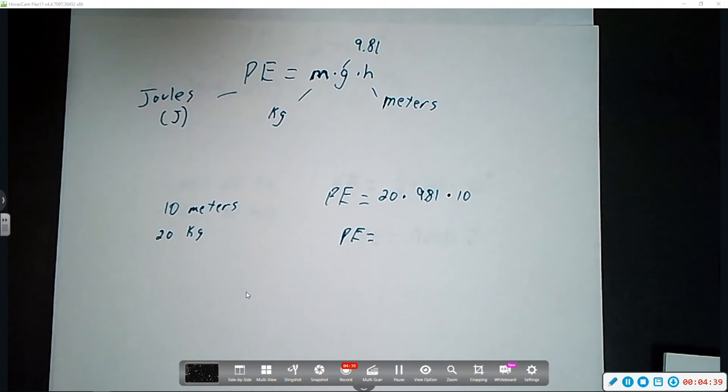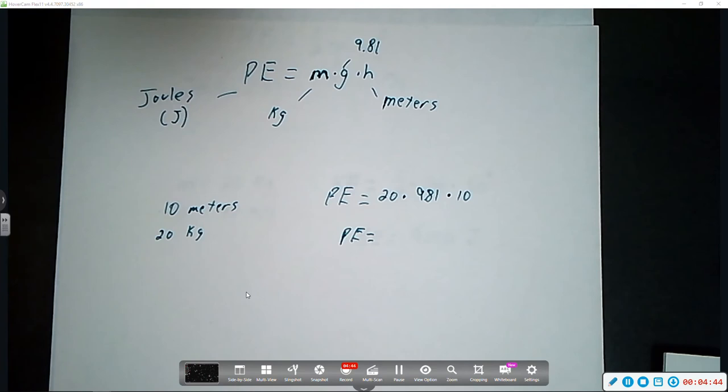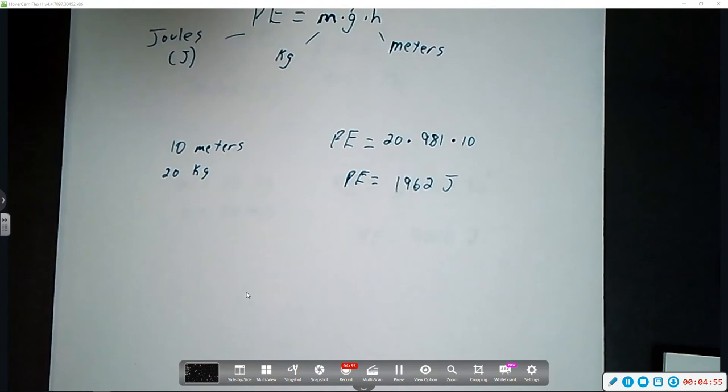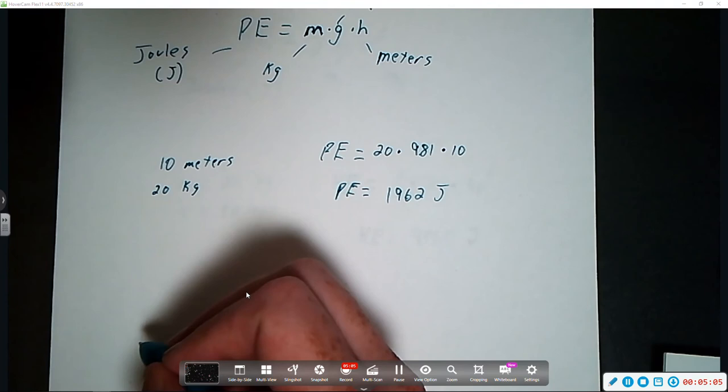So, our potential energy is equal to 20 times 9.81 times 10, which is 1,962 joules. Now, some of the questions are going to be asking you to solve for either mass or height, and they're giving you potential energy. So, let's do an example of one of those.